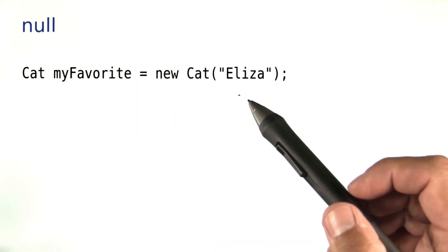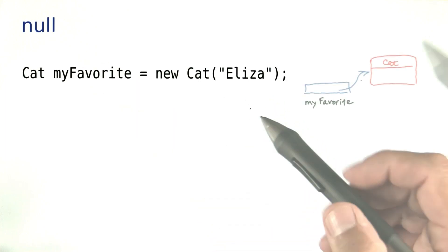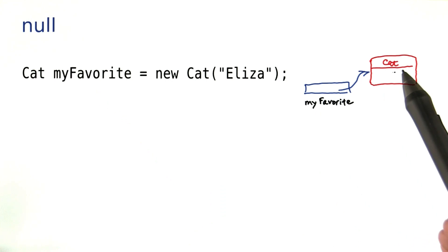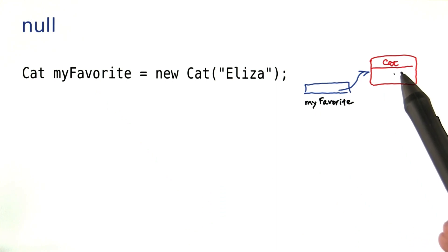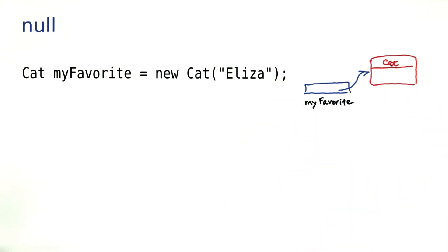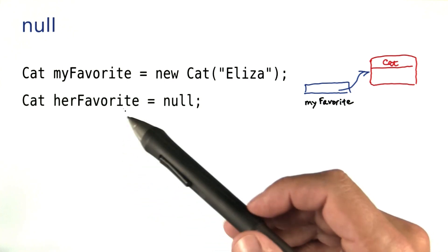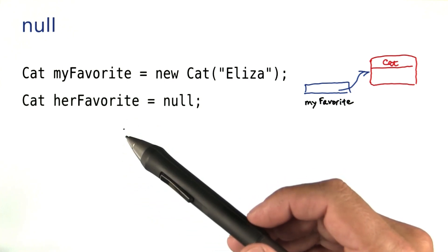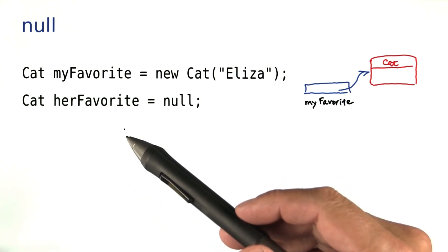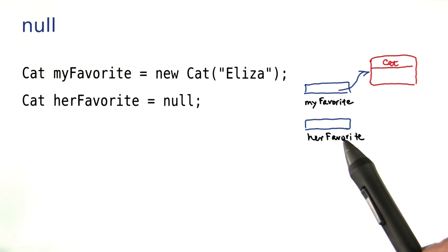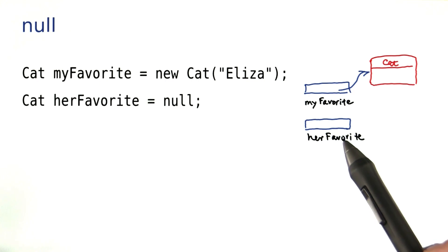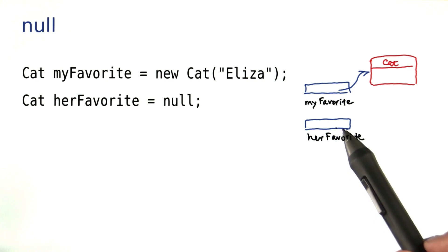Let me explain that. Over here you have a situation with which you're very familiar. We have a variable that references an object of class cat. Now my favorite cat is, in fact, my catalyzer. But maybe Sarah doesn't like cats, and her favorite wouldn't be any cat at all. That is, in the variable her favorite, there wouldn't be any reference to any cat object.